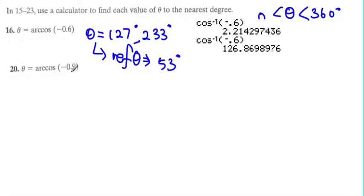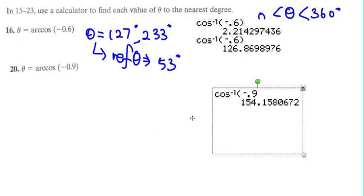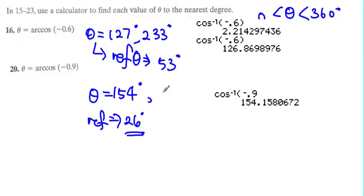The second question is arccos of negative 0.9. Since cosine is negative, we look at the second and third quadrant. One angle equals 154 degrees. The reference angle is 26 degrees, so the second angle equals 180 plus 26, which is 206 degrees.